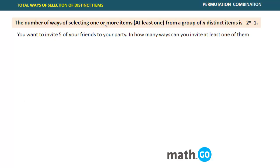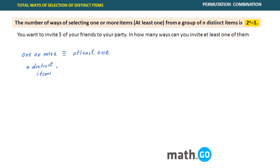The number of ways of selecting one or more items — that is, at least one — these two phrases are the same: at least one, or one or more. From a group of n distinct items, you have to remember this formula. Add it to your formula list. If there are n distinct items, the total number of ways of selection is 2 raised to power n minus 1.